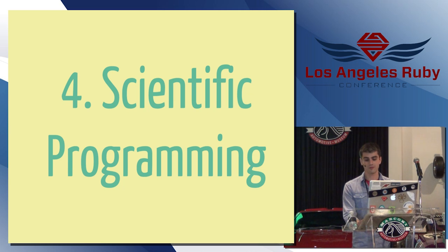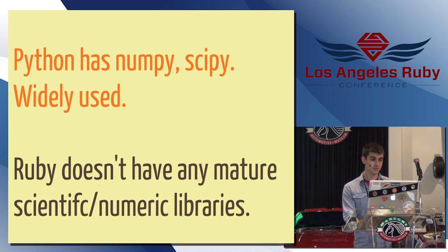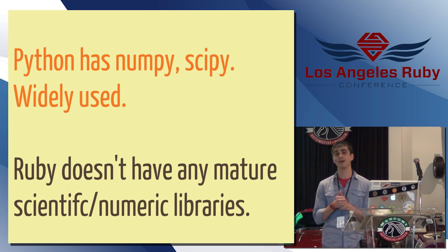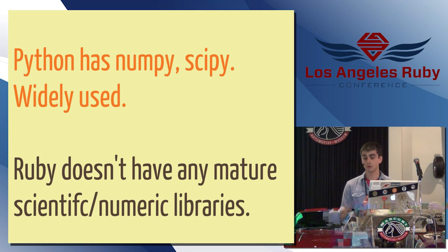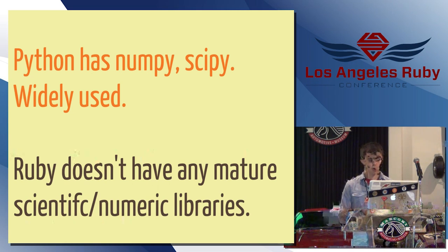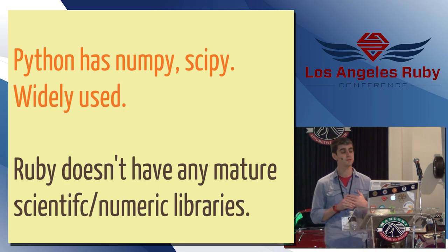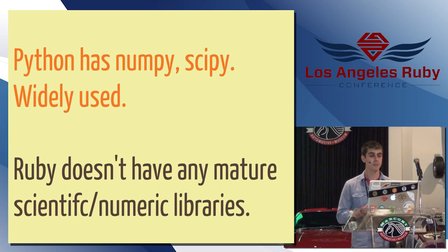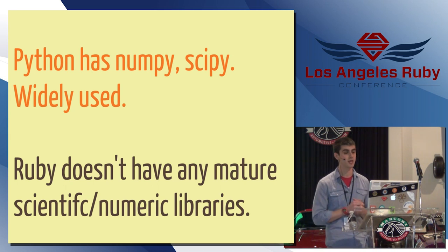Let's talk about scientific programming for a minute. Python has NumPy, SciPy. These are very widely used, especially kind of in the academic finance type problem domains. Ruby I don't think has any real mature scientific numeric libraries. I know some folks are trying to change this and there has been some activity, but I think for now the Ruby community is probably still playing catch up.